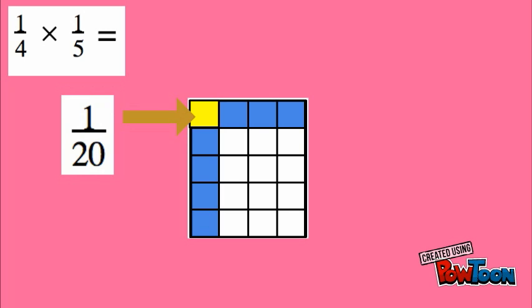So again, when we multiply by a fraction, our answer is actually smaller than what we started with. So another way that we could have got our answer, again, is multiplying. So four times five is twenty, and one times one on top gives us one twentieth.